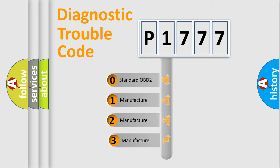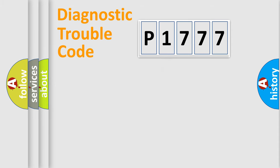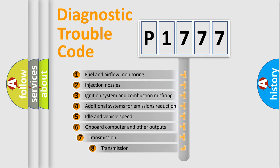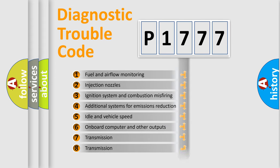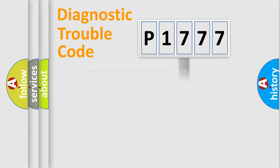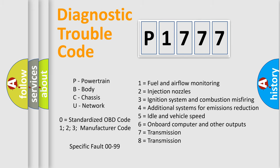If the second character is expressed as zero, it is a standardized error. In the case of numbers 1, 2, 3, it is a car-specific error. The third character specifies a subset of errors. The distribution shown is valid only for the standardized DTC code. Only the last two characters define the specific fault of the group. Let's not forget that such a division is valid only if the second character code is expressed by the number zero.